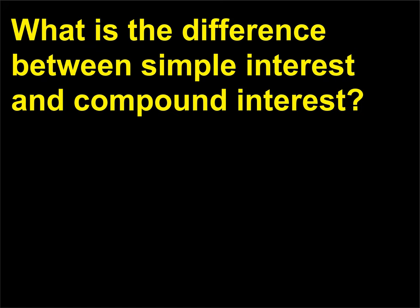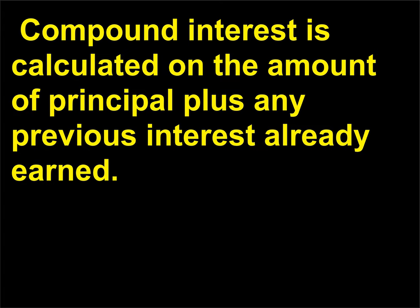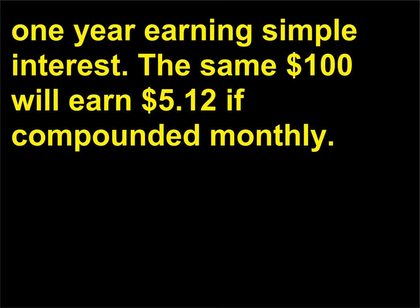What is the difference between simple interest and compound interest? Simple interest is calculated on the amount of principal only. Compound interest is calculated on the amount of principal plus any previous interest already earned. For example, $100 invested at a rate of 5% for one year will earn $5 in simple interest. The same $100 will earn $5.12 if compounded monthly.